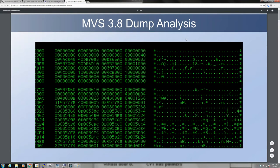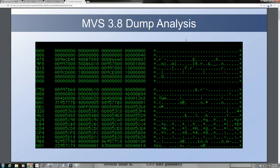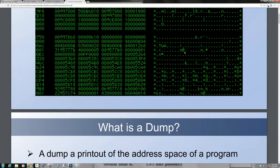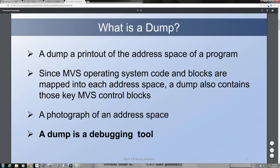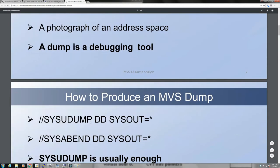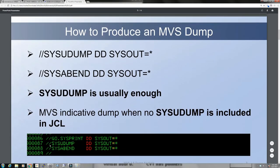Welcome back to my YouTube channel, this is Moshex and today we're continuing with part two of my event analysis tutorial. If you remember, we'll go very quickly over what we discussed in the previous tutorial. A dump is a printout of the address space of a program. At its core, a dump is a debugging tool that helps us find bugs. The way to produce a dump is to code at the very least this line in your JCL.